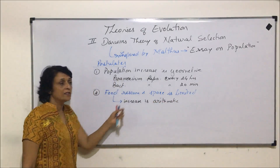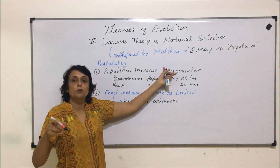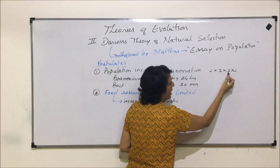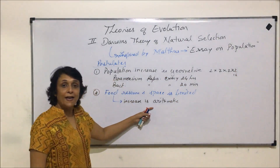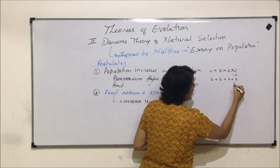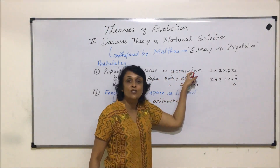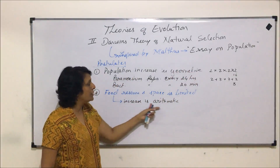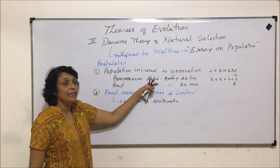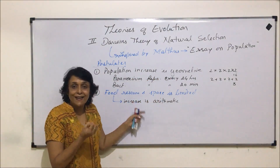To understand geometric versus arithmetic: geometric means 2 × 2 × 2 and so on — giving us 2, 4, 8, 16 — increasing rapidly. In the case of arithmetic it would be 2 + 2 + 2 + 2, giving us 2, 4, 6, 8. The number of organisms increases at a much faster rate in geometric progression, whereas the food resource increases only in an arithmetic manner. So food is always going to be limited, and that is why their numbers are kept under check.